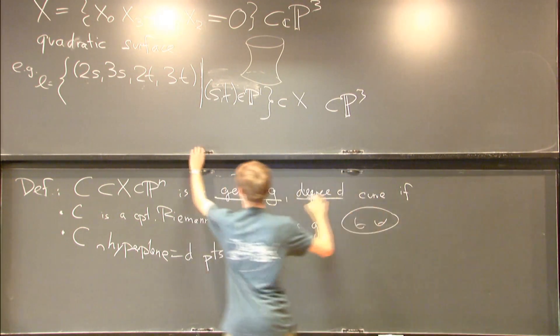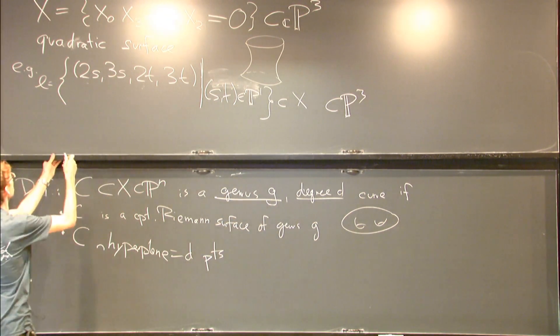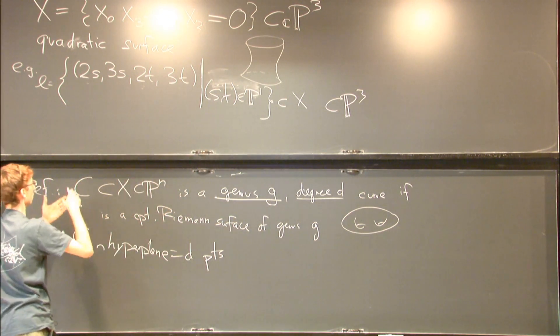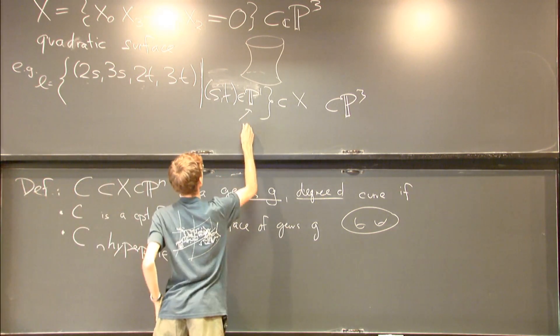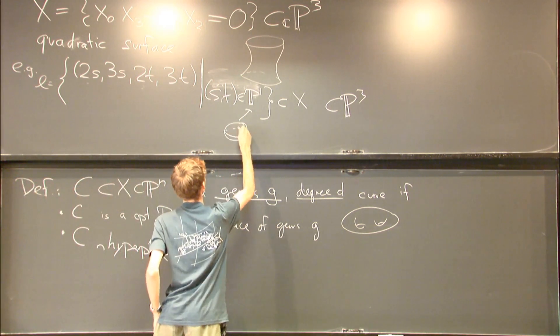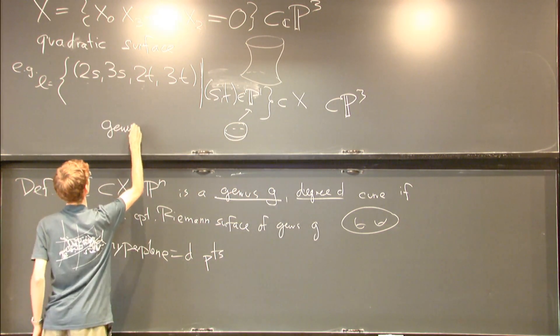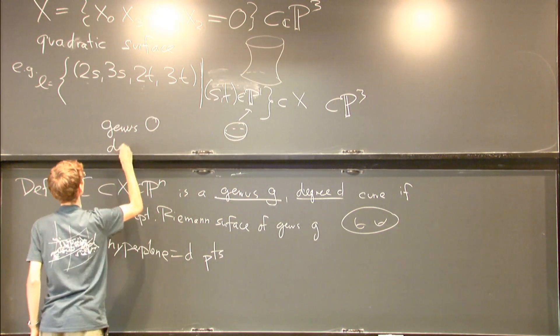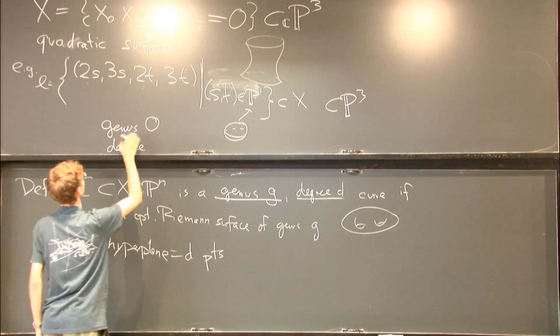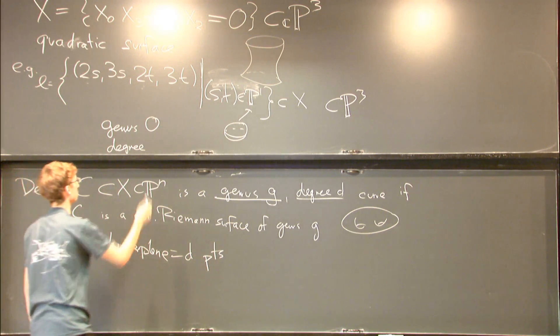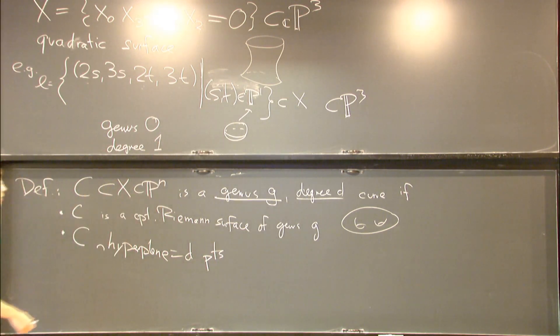In this example up here, since it's P1, it looks like a complex projective line which looks like a sphere, so this is genus 0. Because it's a line intersecting a hyperplane in just one point, it's degree one - the simplest case you could consider.